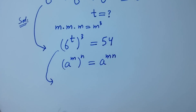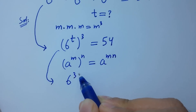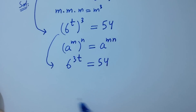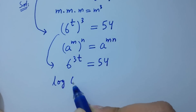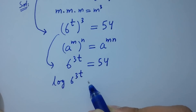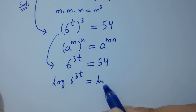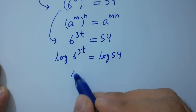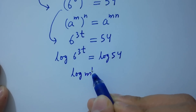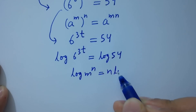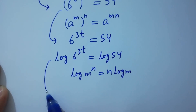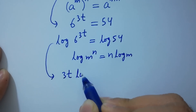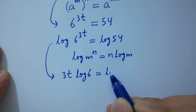We have 6 to the power 3t equal to 54. Taking log on both sides: log of 6 to the power 3t equals log 54. As log m to the power n equals n log m, we get 3t log 6 equal to log 54.